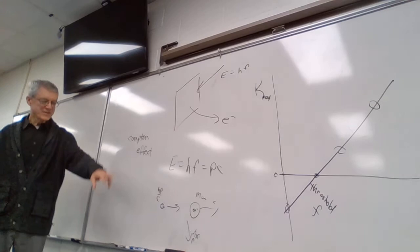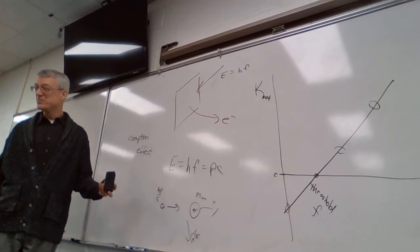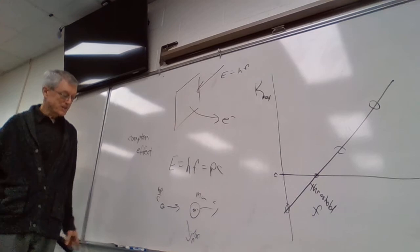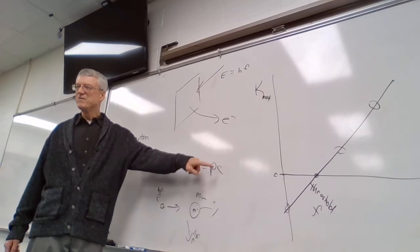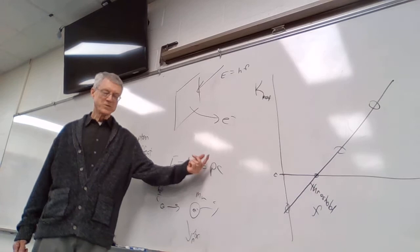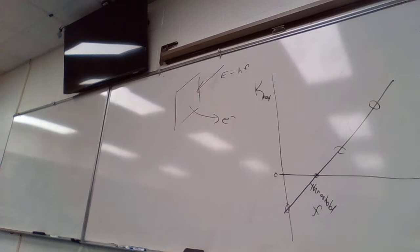The Compton effect is photons colliding with larger particles and losing momentum, which means they change color — their frequency goes down. This is photon scattering. You'll read about it in your textbook. Remember: the momentum formula for a photon, p = hf/c, is not on your equation sheet. You need to remember it. You'll see this concept on the AP exam.